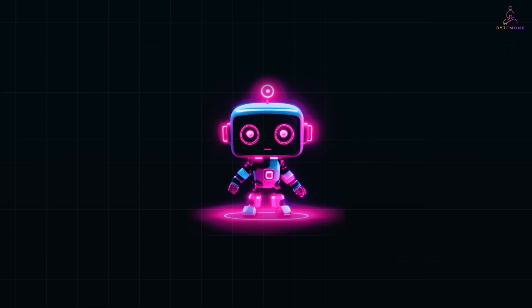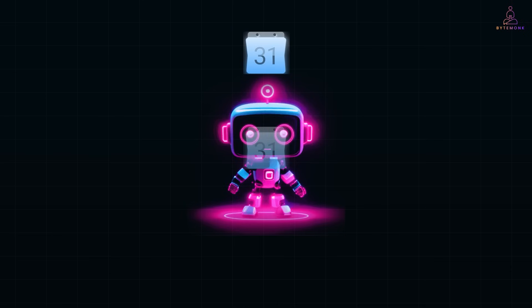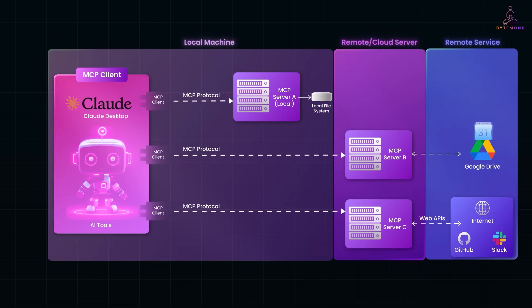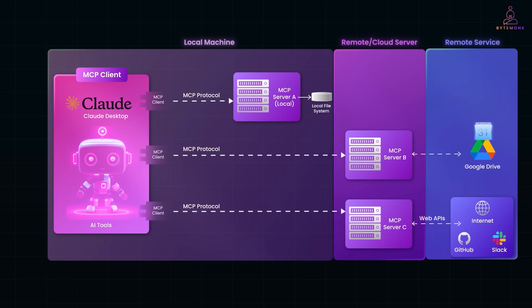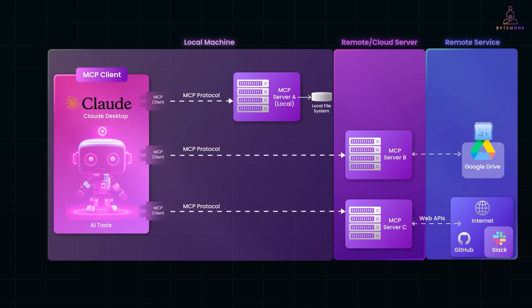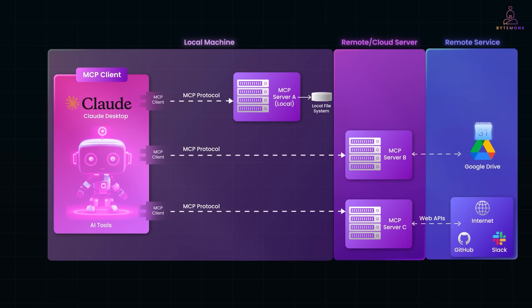Consider an AI writing assistant. Without MCP, if you wanted to include information from your calendar or files, you would have to copy paste that info yourself. With MCP, the assistant on its own can retrieve your schedule from Google Calendar or search your Google Drive via an MCP integration and incorporate that info into its answers. In fact, there are already example MCP connectors for services like Google Drive and Slack, allowing an AI agent to search your files or send messages for you.